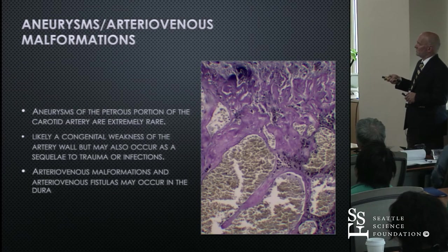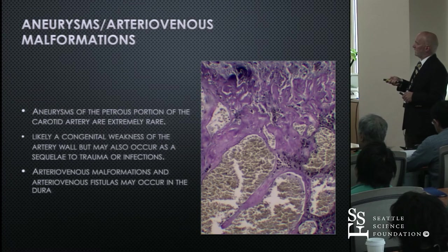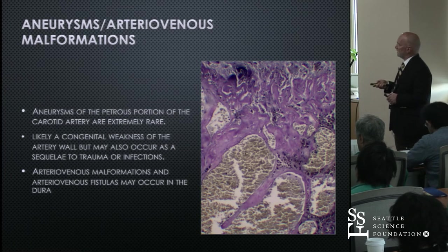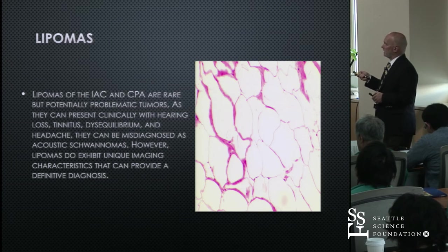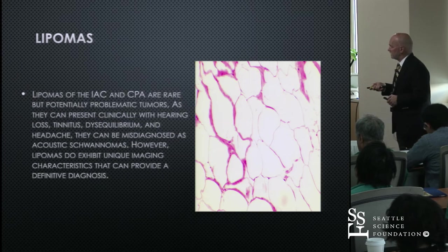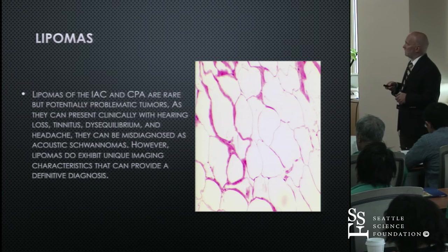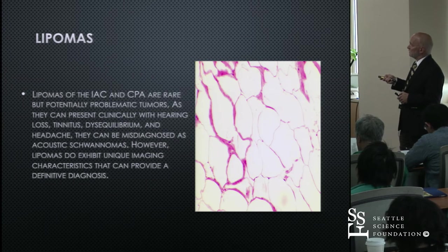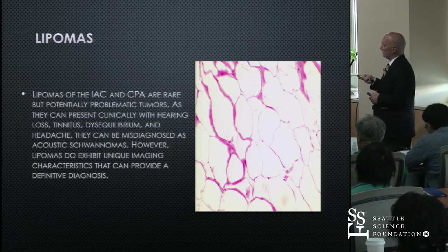Switching briefly to vascular abnormalities: aneurysms are extremely rare in this location, and arteriovenous malformations may also occur in the dura. Lipomas are also a pretty rare event that can occur in the CP angle or attached to some of the cranial nerves. They may be misdiagnosed as acoustic or vestibular schwannomas, but they're just mature fat — probably more of a hamartomatous process than a true neoplasm.